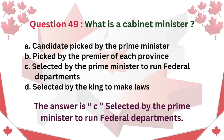Question 49. What is a cabinet minister? A. Candidate picked by the Prime Minister B. Picked by the Premier of each province C. Selected by the Prime Minister to run federal departments D. Selected by the King to make laws. The answer is C. Selected by the Prime Minister to run federal departments.